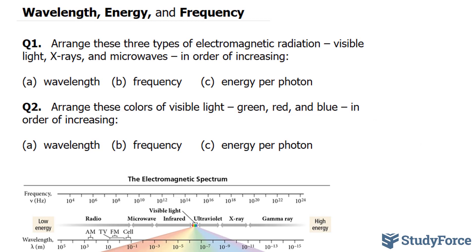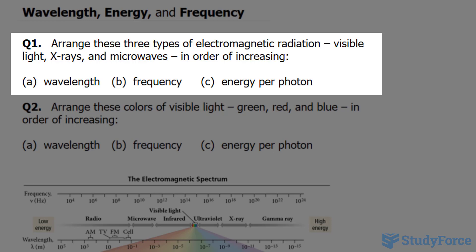In this lesson, we'll discuss how to arrange in order three types of electromagnetic radiation. Question one reads: Arrange these three types of electromagnetic radiation - visible light, X-rays, and microwaves - in order of increasing (a) wavelength, (b) frequency, and (c) energy per photon.